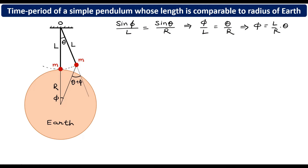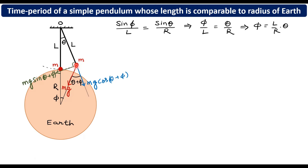Now we draw the free body diagram of the bob. There are two forces: weight and tension. The weight acts towards the center of the earth, with magnitude mg. The component of mg along the line of the pendulum is mg cos(theta plus phi), and the perpendicular component is mg sin(theta plus phi). To prove the motion is simple harmonic, we need to arrive at the equation alpha equals minus omega squared times theta.